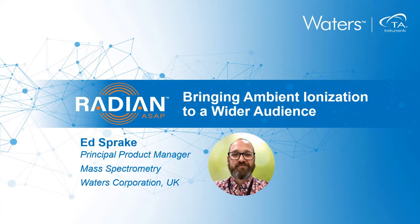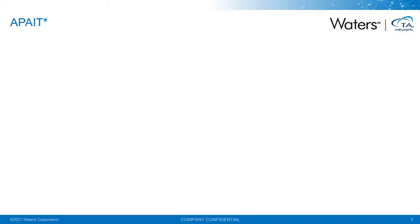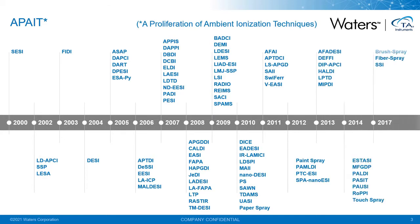Thanks very much for the introduction, Ariel. I'm going to spend a little time today talking about the new Radian ASAP instrument and our intention to make ambient ionization a little more accessible. Ambient ionization is an area with a great deal of interest as it promises a faster, more convenient way of sampling than techniques such as LC-MS or GC-MS. A quick search pulls up quite a proliferation of ambient direct ionization techniques, giving you an idea of how rich and widespread research in this area is.